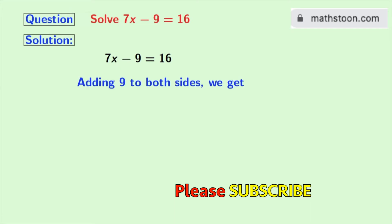To get that we will add 9 to both sides. Doing that we get 7x minus 9 plus 9 is equal to 16 plus 9.